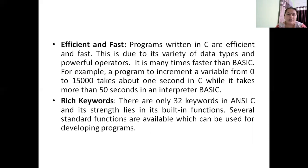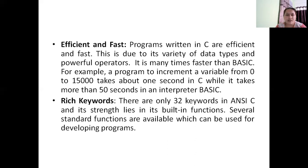For example, a program that increments a variable from 0 to 15,000 takes about one second in C language, but it took around 50 seconds in the Basic language. After the C99 version came, the C language speed is quite comparable to Java and C++ as well — almost comparable speed can still be achieved with C.